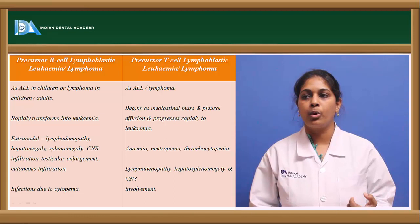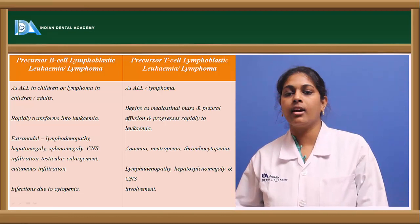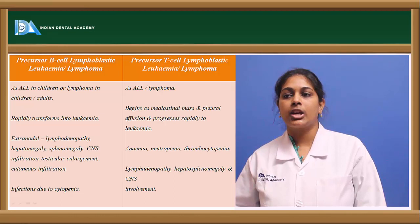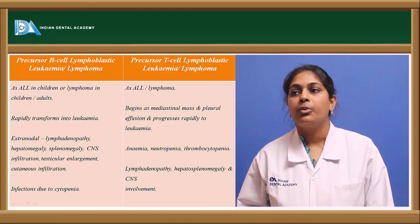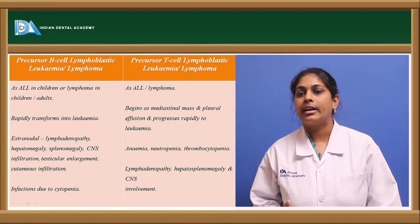Extranodal involvement in precursor B cell ALL includes hepatomegaly, splenomegaly, CNS infiltration, testicular enlargement, and cutaneous infiltration, along with infections due to cytopenia. In precursor T cell ALL, features include anemia, decreased hemoglobin, neutropenia, thrombocytopenia, lymphadenopathy, hepatosplenomegaly, and CNS involvement.